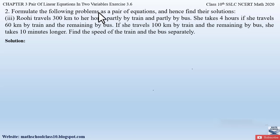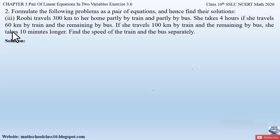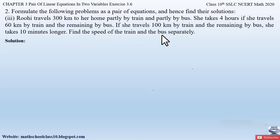The question says: Ruhi travels 300 kilometers to her home partly by train and partly by bus. She takes 4 hours if she travels 60 kilometers by train and the remaining by bus. If she travels 100 kilometers by train and the remaining by bus, she takes 10 minutes longer. Find the speed of the train and bus separately.